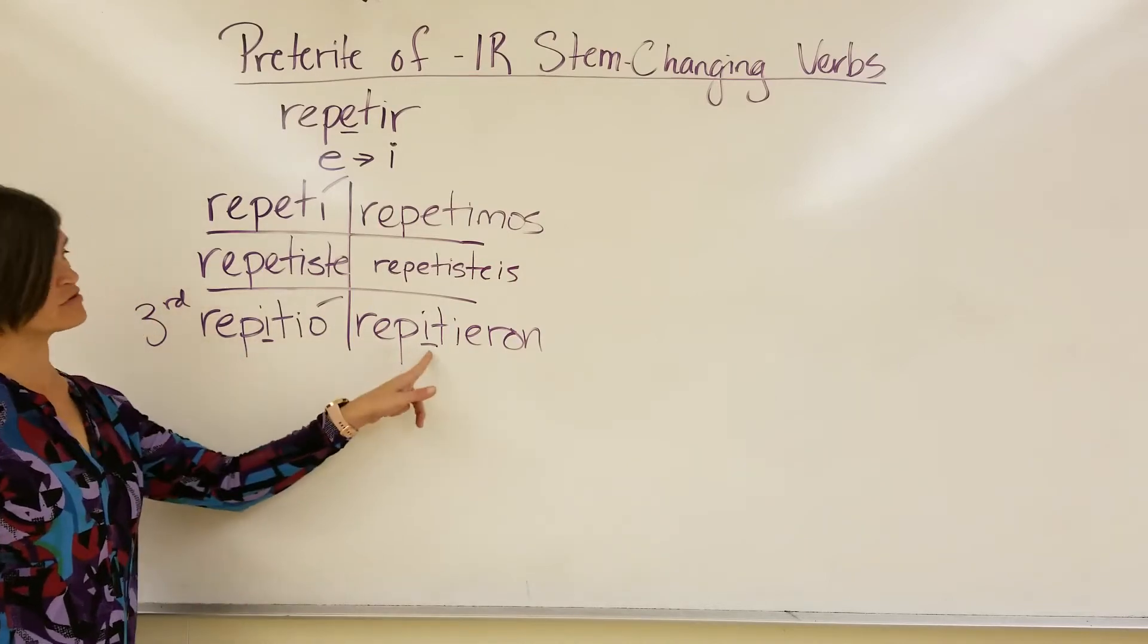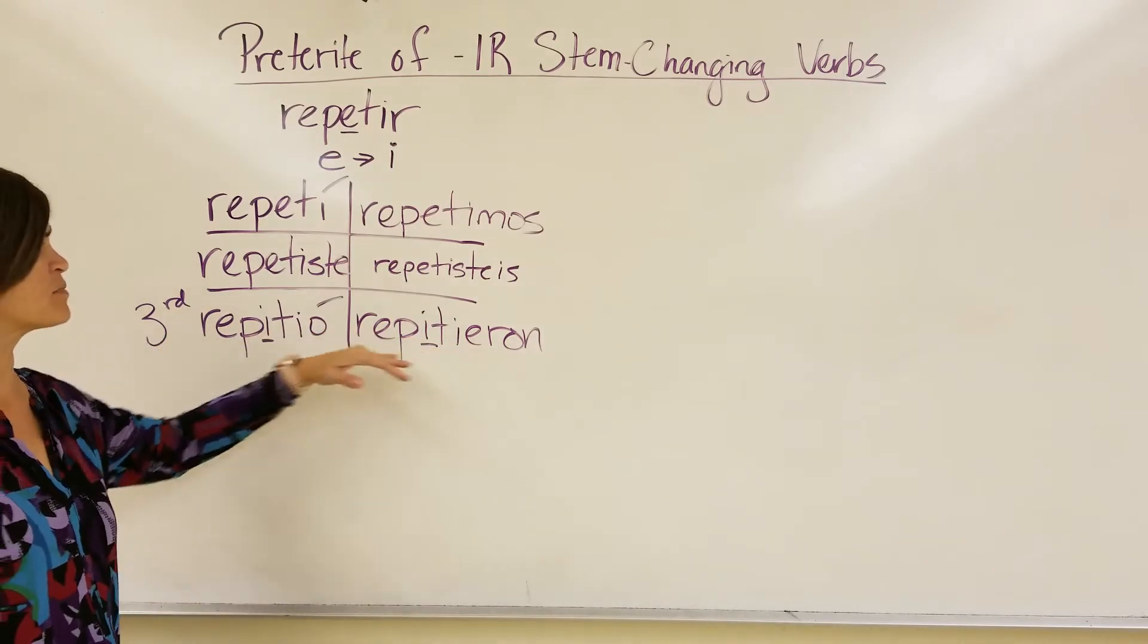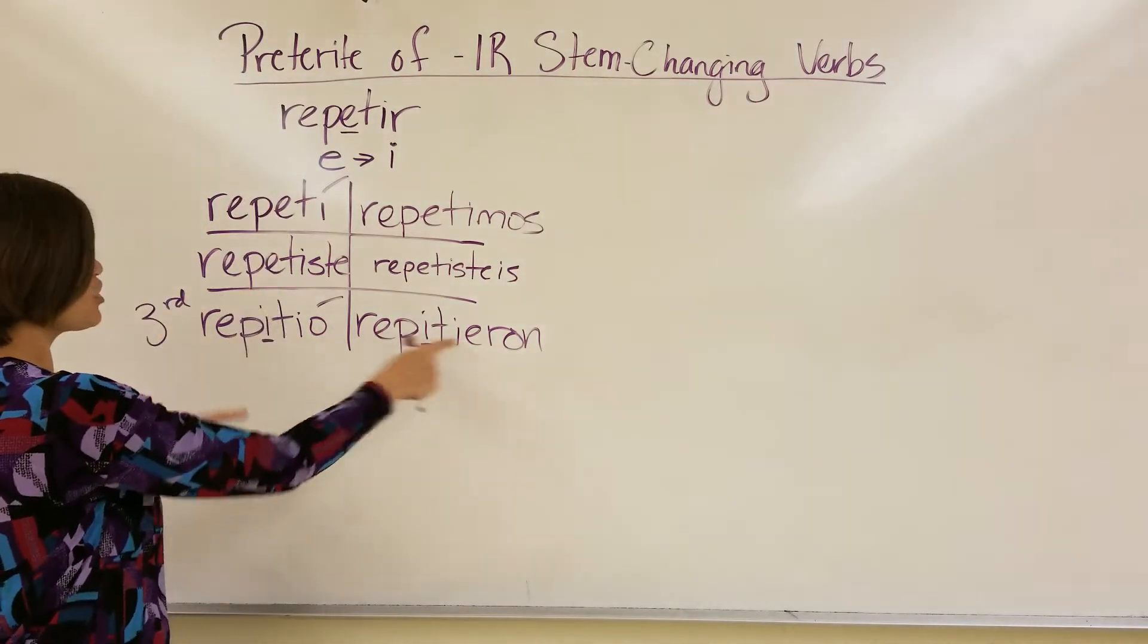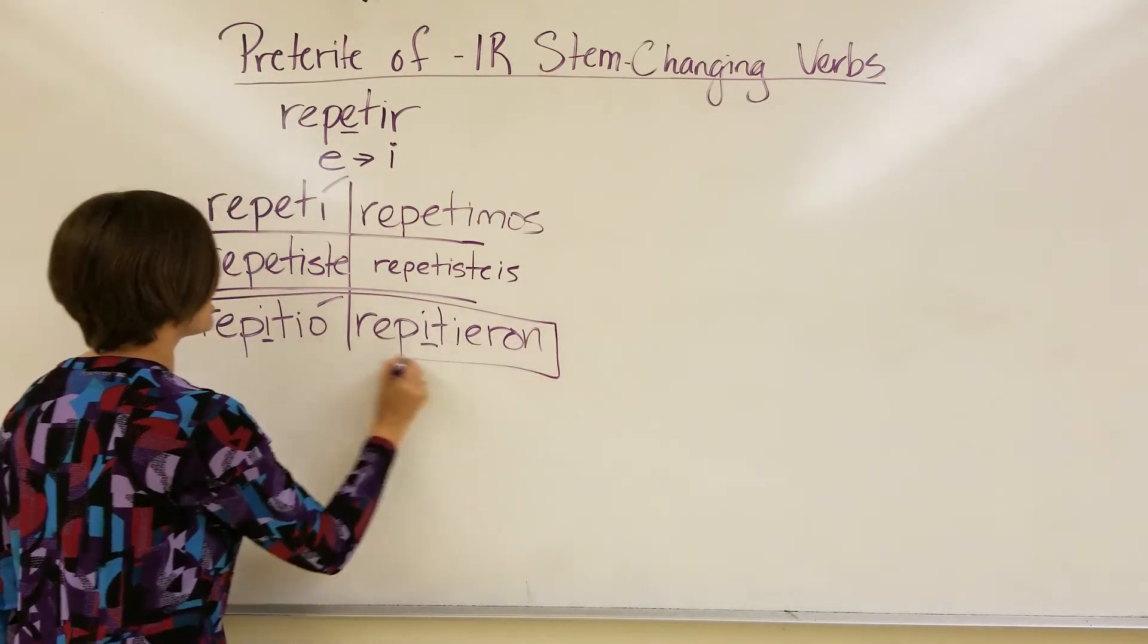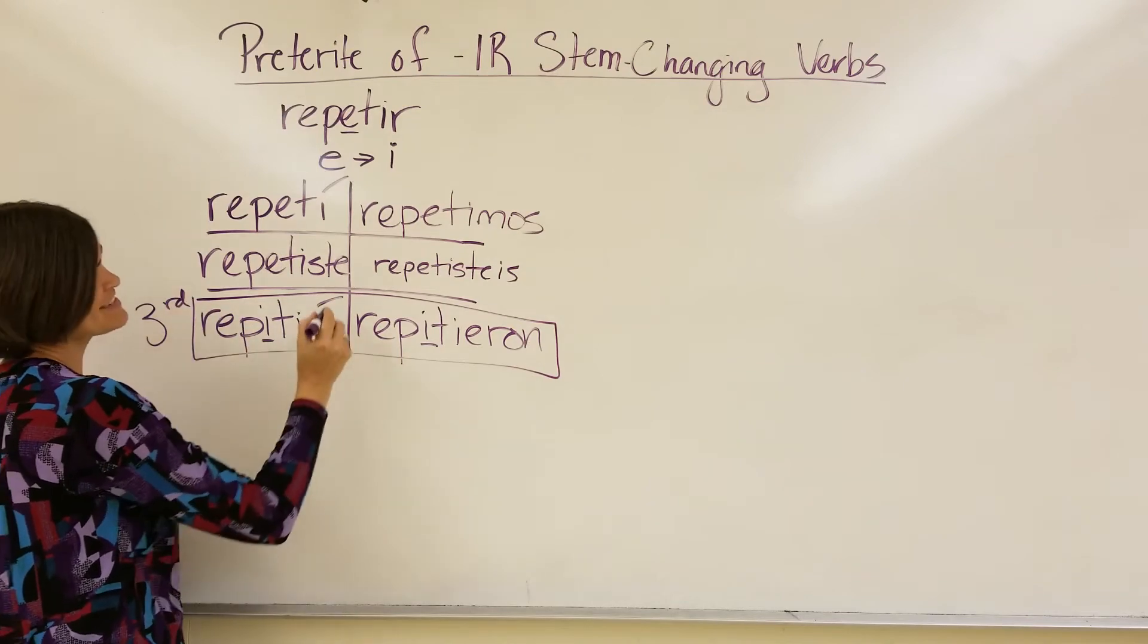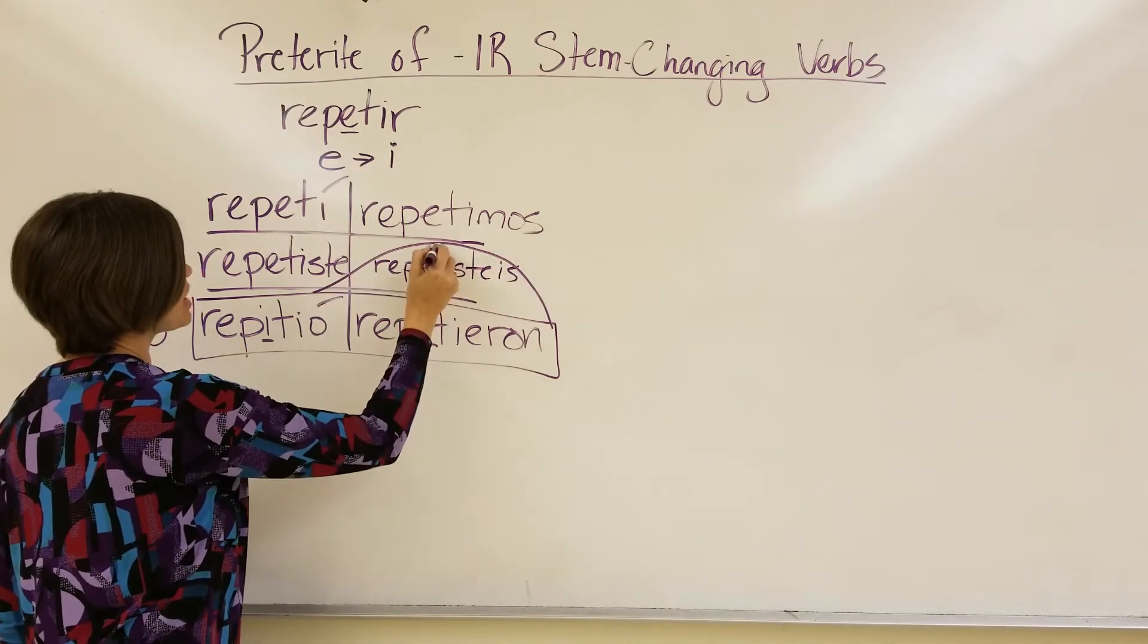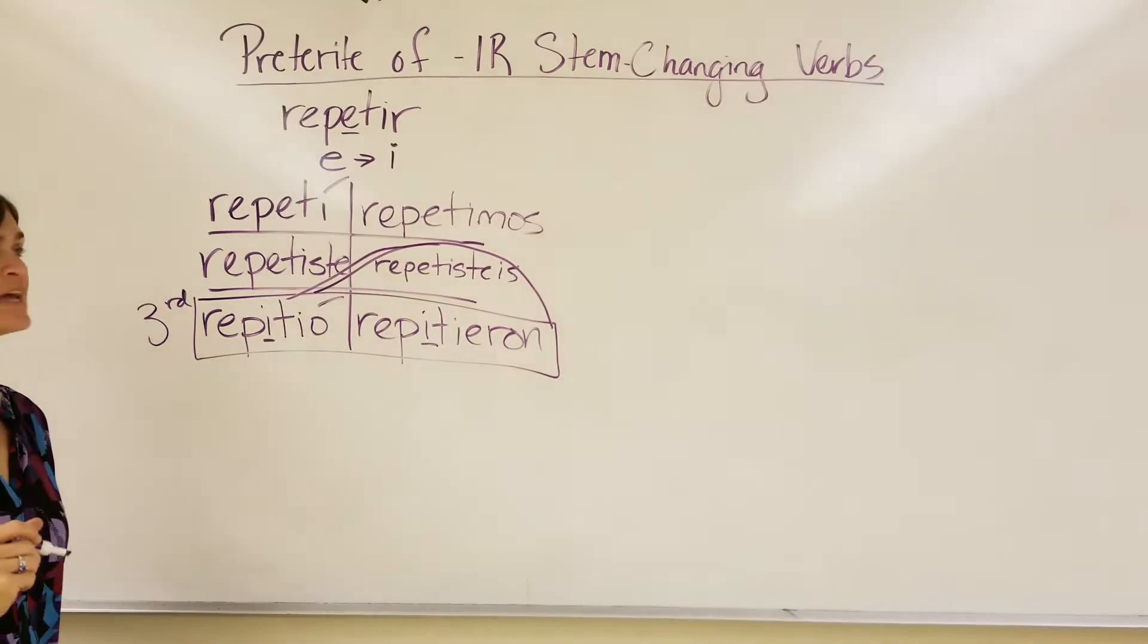So, our only changes are right here, in the third person. And for this reason, because the change only happens in the bottom there, we have a nice friendly name for these. The other ones were called boot verbs. And since this only happens down here on the bottom, we're going to call these sandal verbs. All right, so here's my little sandal strap. We'll call this one a sandal verb.